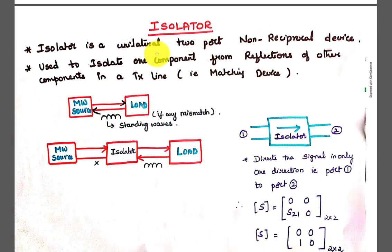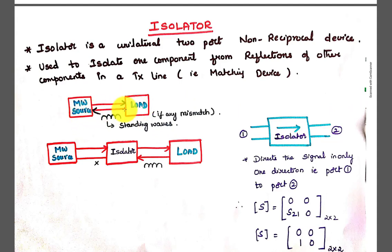Coming to the isolator: the isolator is a 2-port unilateral non-reciprocal device. All ferrite devices are non-reciprocal devices. The isolator is used to isolate one component from the reflections of another component in a transmission line, mainly for matching purposes. Without an isolator, if the microwave source is connected to the load and there are impedance mismatches, some part of the power is reflected back as standing waves, causing instability of the source or frequency change — which is highly undesirable.